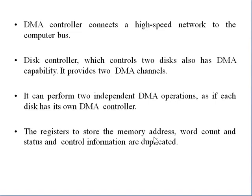The disk controller, which controls two disks, also has DMA capability. It provides two DMA channels — one for each disk — so it can perform two independent DMA operations, as if each disk has its own DMA controller. To store all necessary information, three registers are required: the first register stores the memory address, the second register stores the word count (number of words), and the third register stores status and control information.